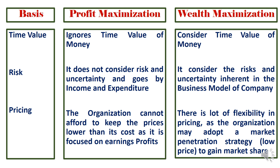When it comes to pricing, profit maximization cannot afford to keep prices lower than cost price since the focus is on earning more profits. Whereas wealth maximization offers flexibility in pricing — the organization may adopt a market penetration strategy to gain more market share. Presently they may incur losses, but in the future they earn more profit. A best example is Reliance Jio and the strategy they applied for internet connections.